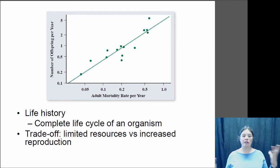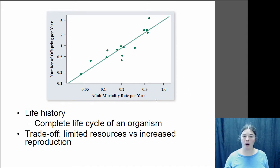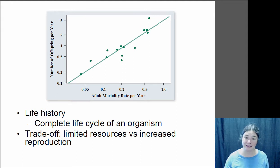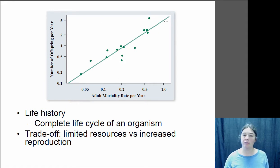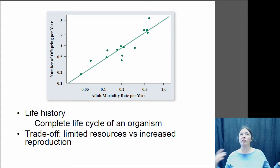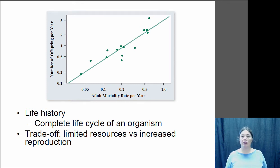You tend to see this trade-off in terms of the number of offspring per year when comparing across species. Species with a high adult mortality rate — those that survive for a short period — tend to have more babies per year. Species that survive for a long period tend to have fewer babies per year. It's a question of whether you're investing in yourself to live a long time, or investing in your babies right now. This pattern is seen across many different species.